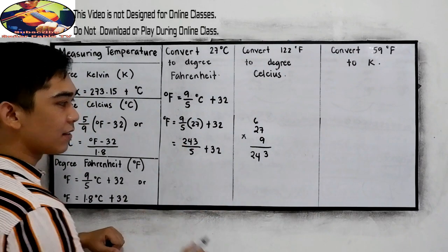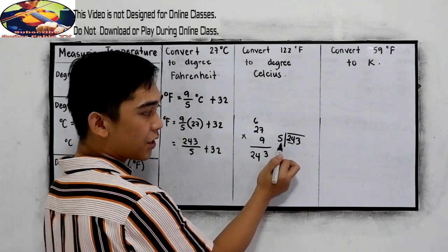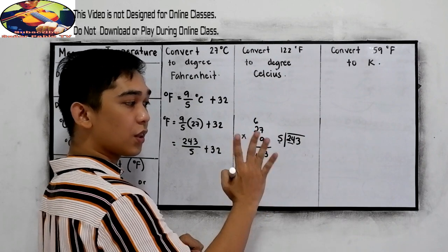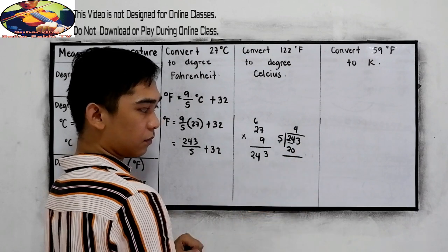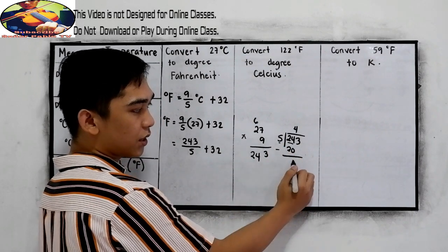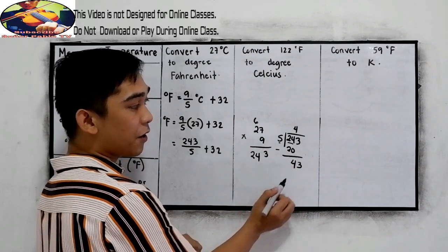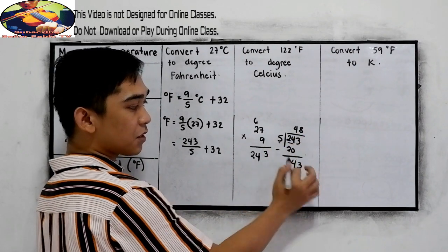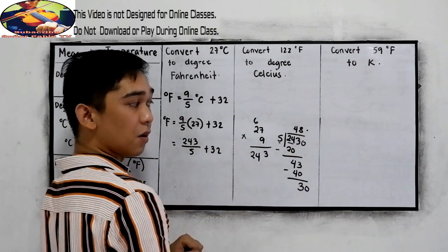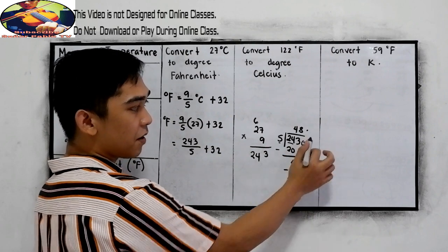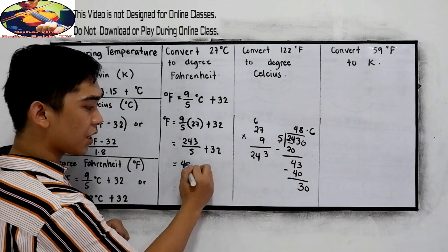Now divide 243 by 5. 5 goes into 24 four times (5 times 4 is 20); subtract to get 4, bring down 3 to get 43. 43 divided by 5 is 8 (8 times 5 is 40); subtract to get 3, write the decimal point, and 30 divided by 5 is 6. So 243 over 5 equals 48.6.